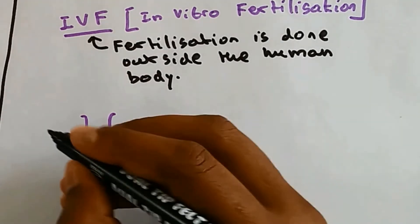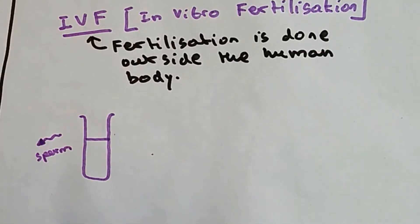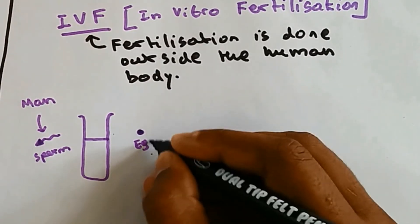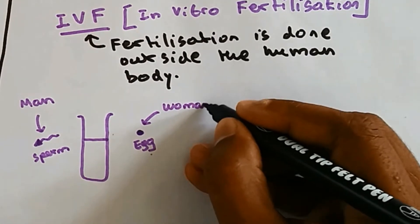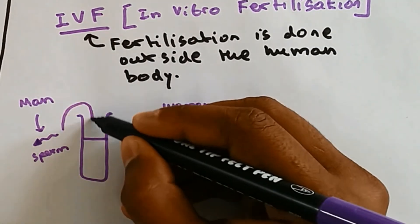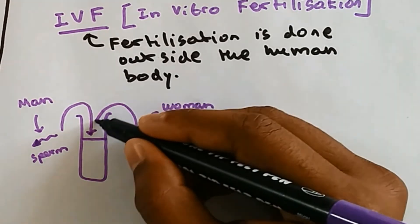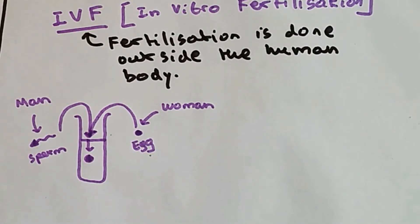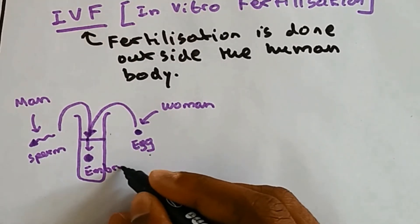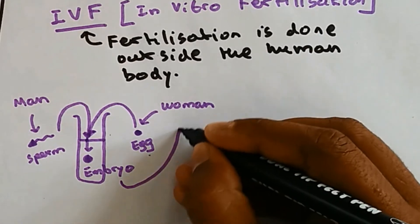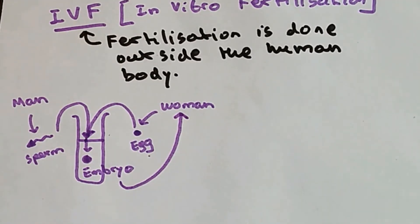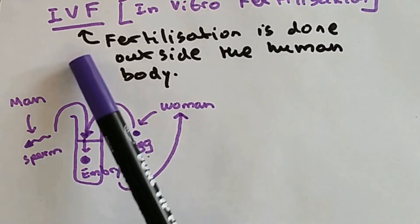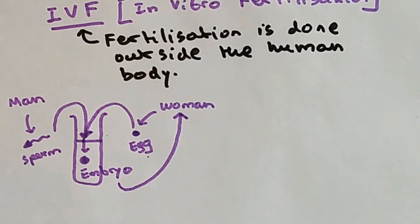Let me show you this with a diagram. The sperm is taken from the man and the egg is obtained from the woman. The sperm and egg are placed in a test tube where fertilization occurs. This fertilized egg forms into an embryo, which is then implanted back into the woman's uterus. That is why it's called in vitro fertilization — in vitro meaning outside the human body.